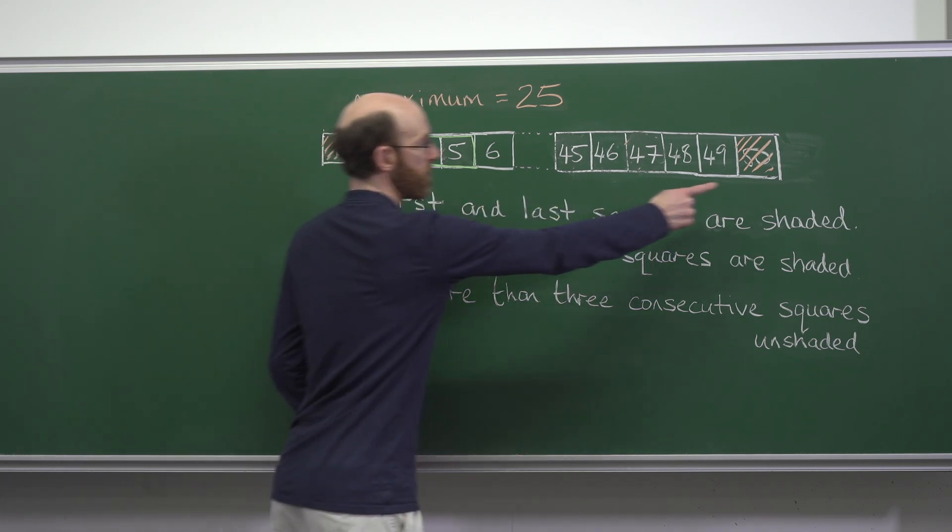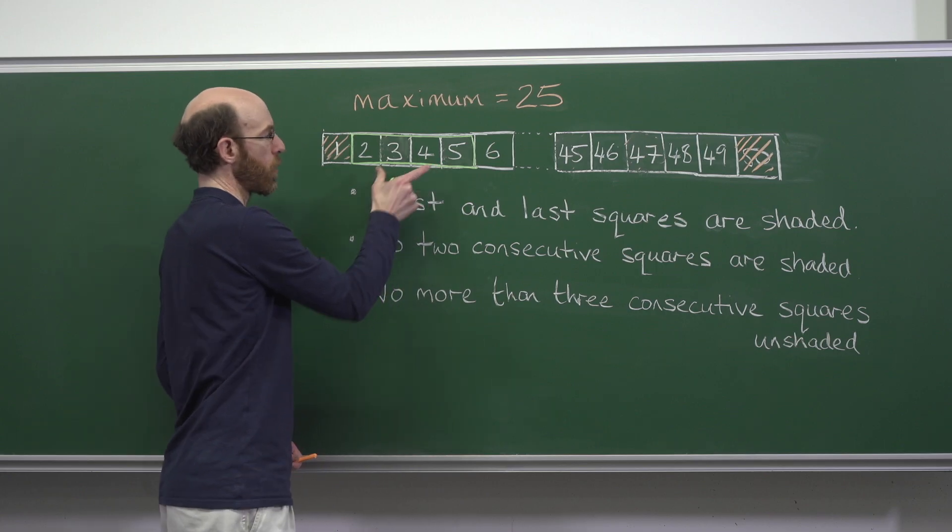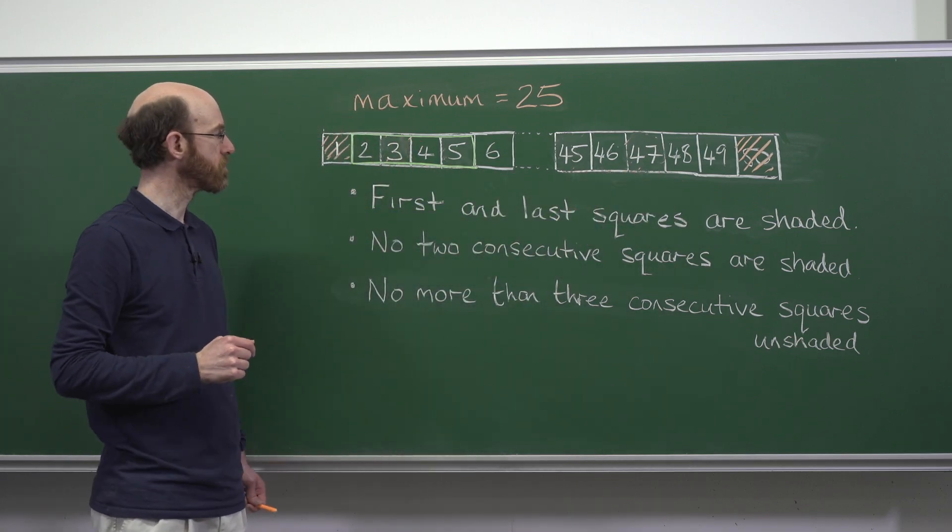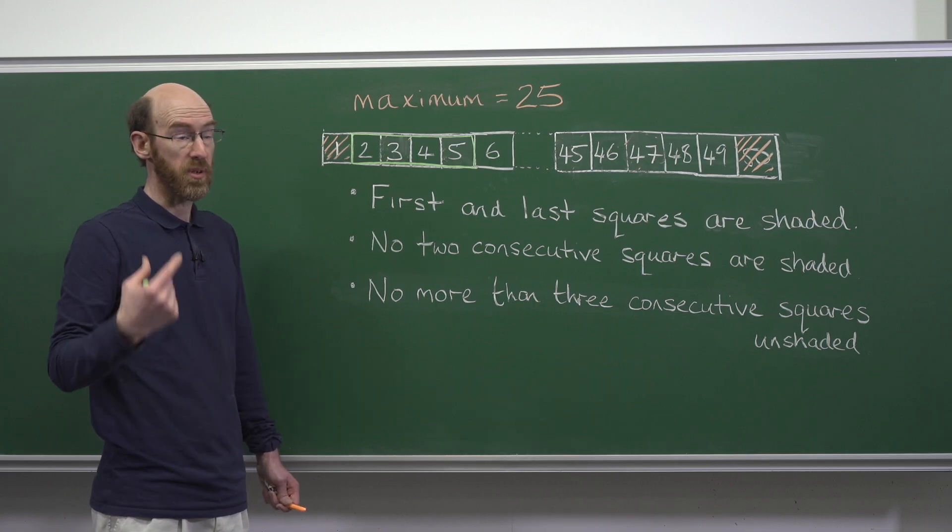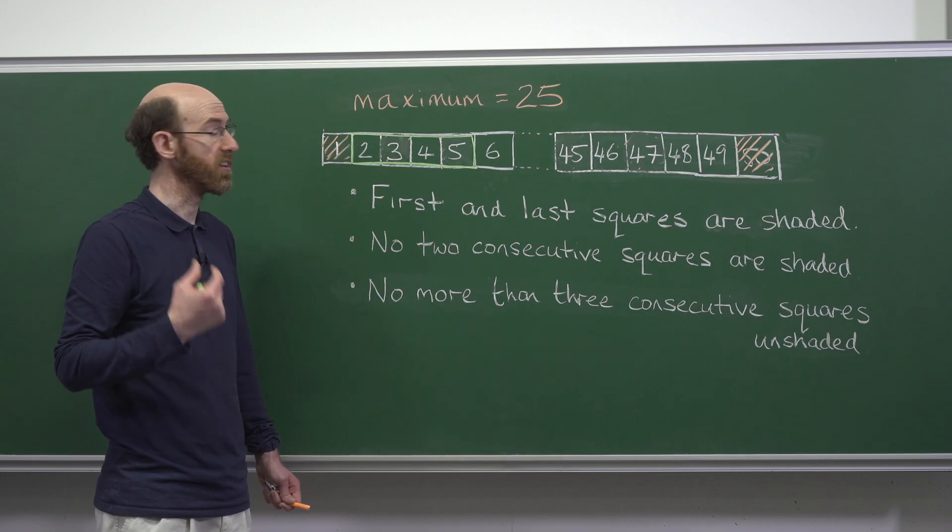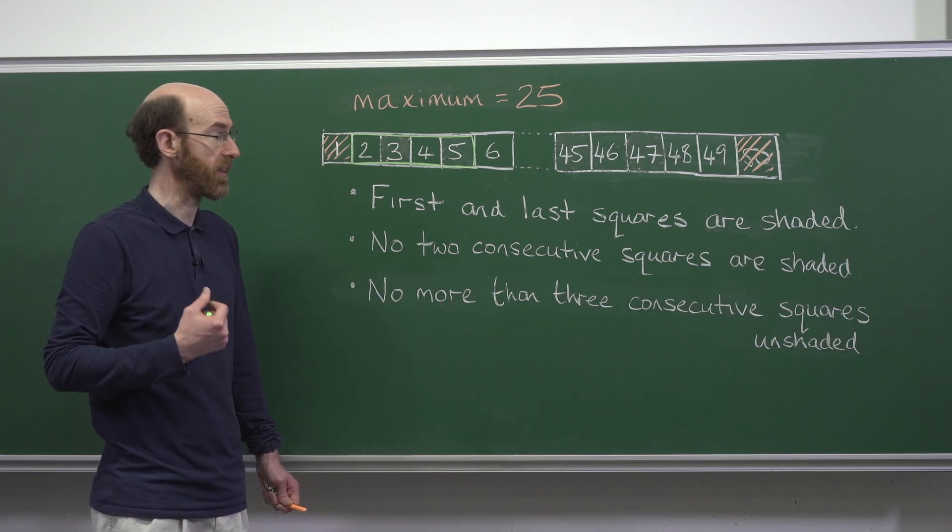Between one and 50 there are 12 such tetrominoes, so that would suggest we have a lower bound of 14, but we have to prove that there is a shading that exists to obtain that. There is.